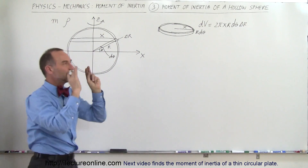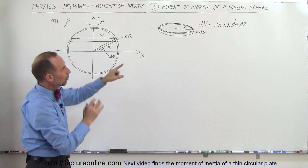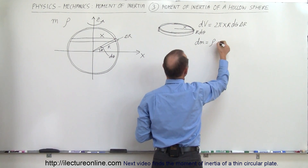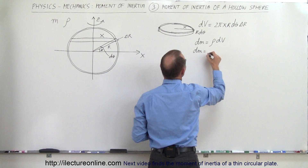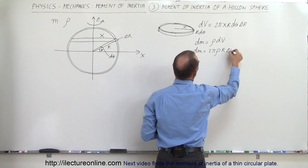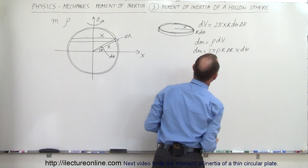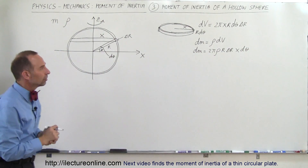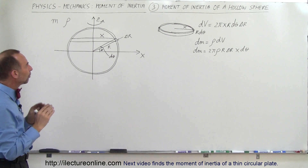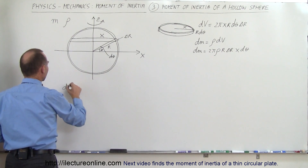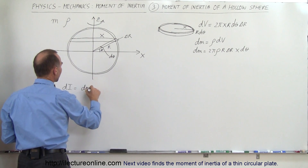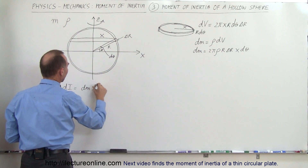We take the circumference times the height — that's the surface area — times the thickness delta r, and that gives the volume of that little disc. The mass dm equals the density times the volume dv, so the mass of that small disc is 2π rho r delta r x d theta. Since it's a disc spinning on its axis, all the mass is at the farthest distance from the point of rotation, so dI equals dm times x squared.